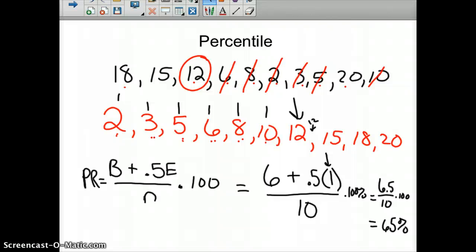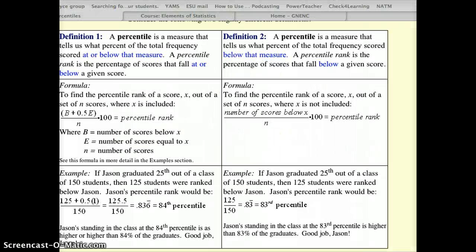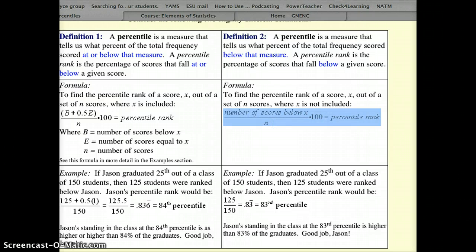Now if you want to go the other direction, and you want, say you have your percentile rank of 65% and you want to find out what your score would be, we're going to use the second definition. A percentile is a measure that tells us what percent of the total frequency scored below that measure. So not at or below, just below the measure. And here's the formula.